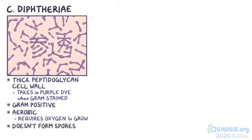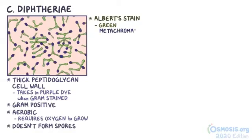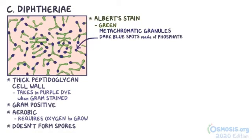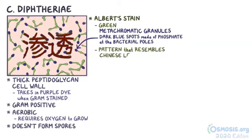When stained with Albert's stain, these bacteria demonstrate some unique features. They look like green, club-shaped bacteria with metachromatic granules, which are dark blue dots made of phosphate located at the bacterial poles. When there are a lot of them clustered together, these bacteria seem to be arranged in a characteristic pattern that resembles Chinese letters.